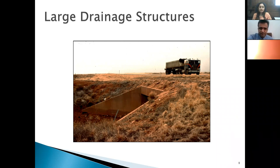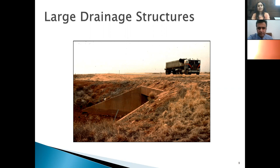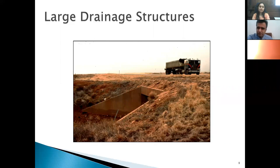For example, here we see a large drainage structure without any protection. Any vehicle could run off into it. This actually happened to me and my family once — we were very lucky we didn't suffer significantly. If we have a guardrail system here, it would redirect us from this dangerous zone, reduce the severity of the impact, and direct us back to the roadway safely.